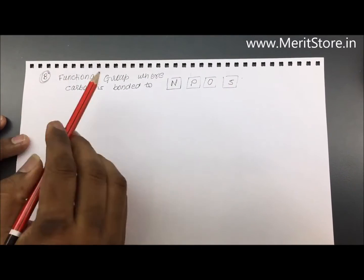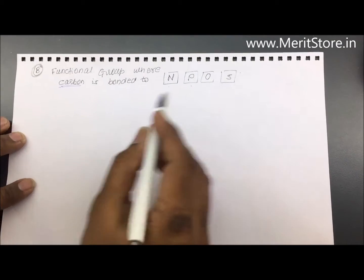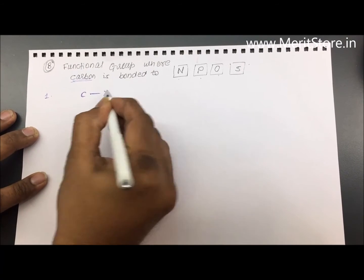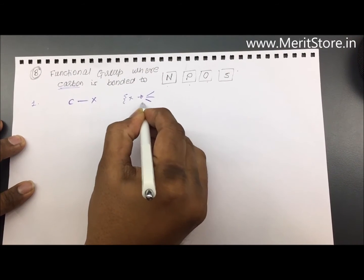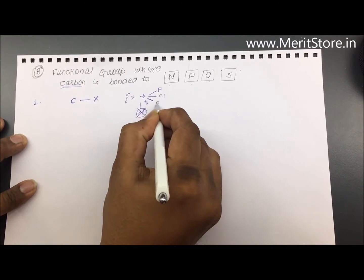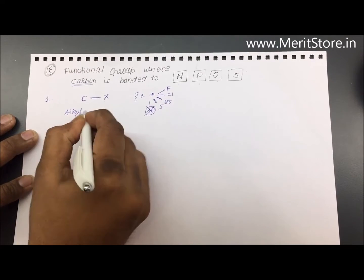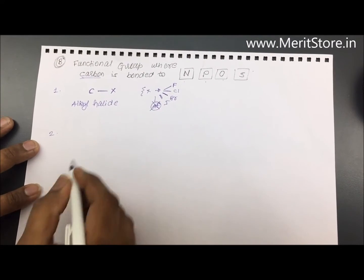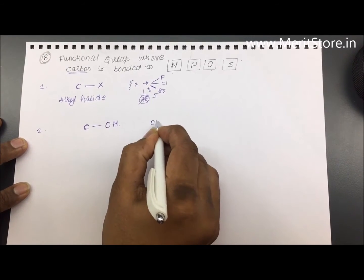The next category of functional groups is where the carbon atom is bonded to either nitrogen, phosphorus, oxygen, or sulfur. The first one in that is carbon connected to X, where X is your halogen — fluorine, chlorine, bromine, or iodine. These are called alkyl halides. We'll talk of nomenclature later in another class.